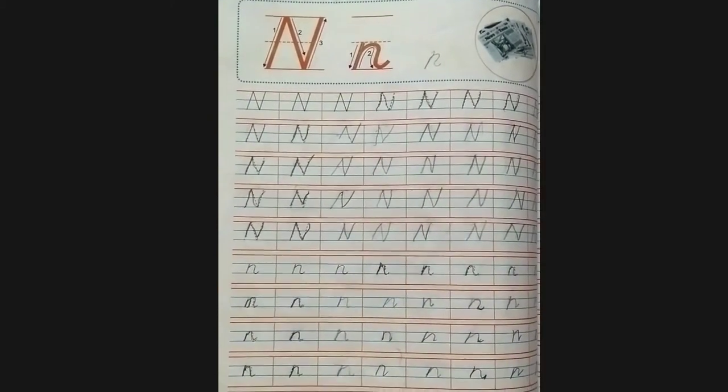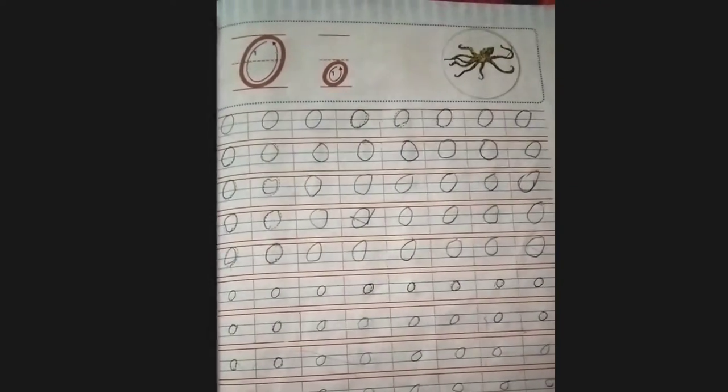M for monkey. Capital N and small n, N for newspaper. Capital O and small o.